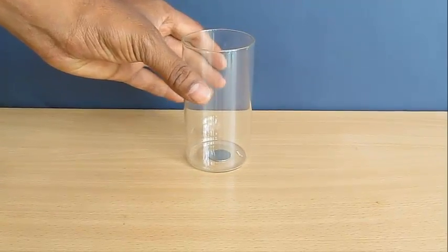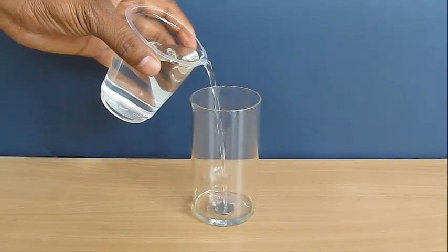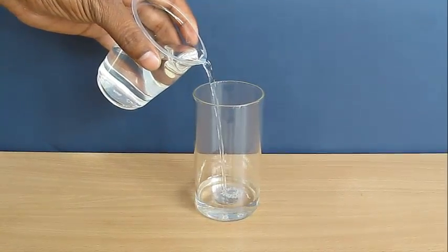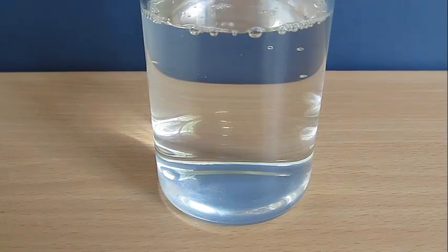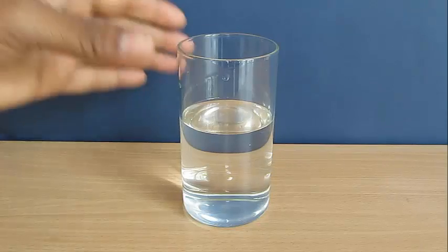Just put a coin underneath the glass and pour water. As we have seen in the previous disappearing coin trick, when we pour water, the coin magically disappears. Because when the light from the coin enters the glass through air, it bends so much that it completely misses the coin.